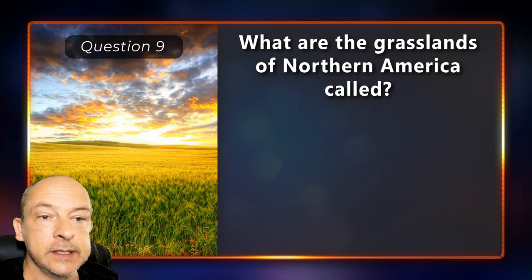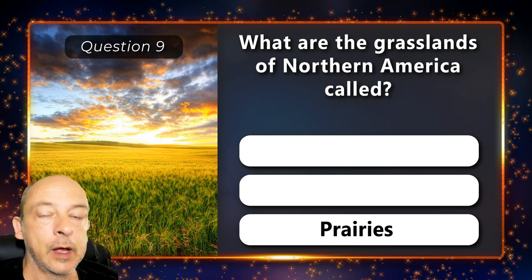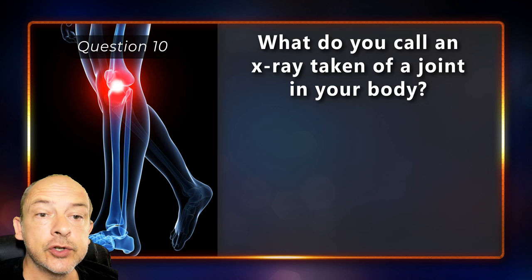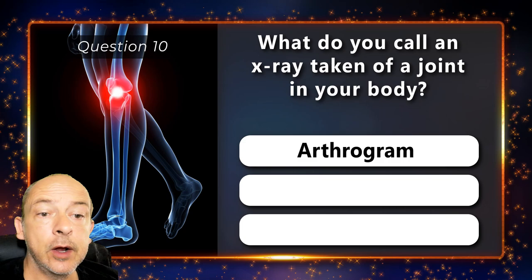What are the grasslands of North America called — is it savannah, felt or prairies? What do you call an X-ray taken of a joint in your body — is it an arthrogram, mammogram or a fluorogram? An arthrogram.